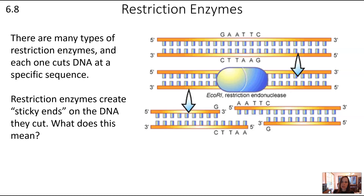There are many different kinds of restriction enzymes and you don't need to memorize any of them, but you do need to know how they generally work. Each type of restriction enzyme cuts at a particular sequence of DNA. For example, EcoR1 cuts in the sequence GAATTC, reading in the five-to-three direction, cutting between that G and A. Restriction enzymes create sticky ends on the DNA.